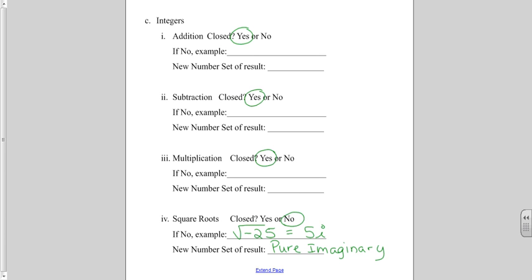Question C dealt with the integers. The integers are closed for addition, because whenever I add two integers, my answer is always an integer. They're also closed for subtraction, because whenever I subtract two integers, I wind up with an integer. They're closed for multiplication, because when I multiply two integers, the answer is always an integer.